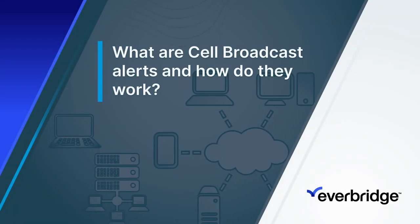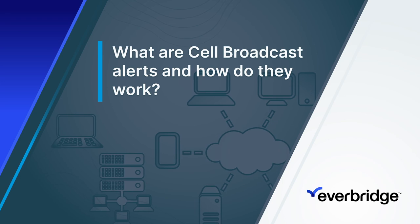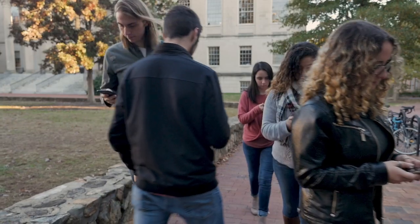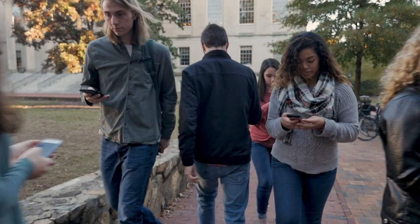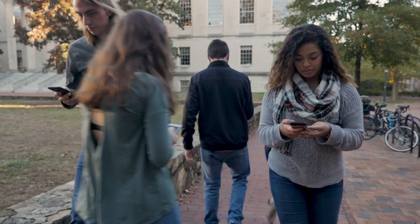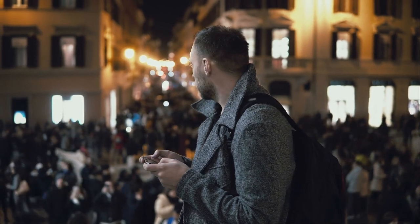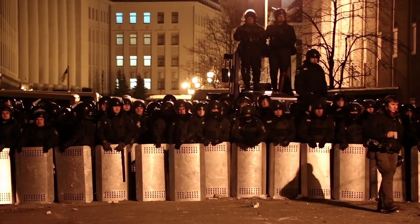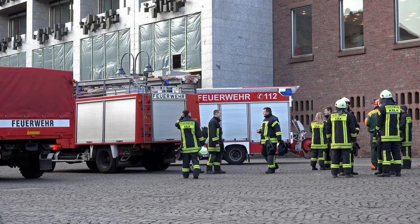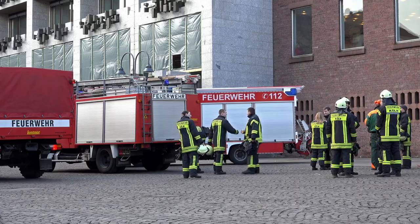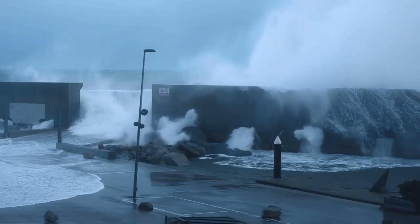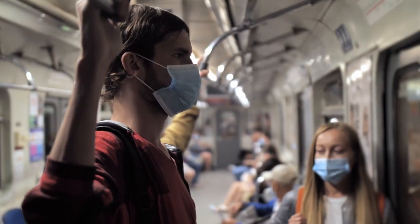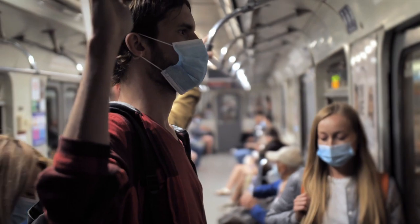What are cell broadcast alerts and how do they work? Public warning systems are used to warn and inform the population before, during and after a major incident, including severe weather, natural and man-made disasters or a pandemic.